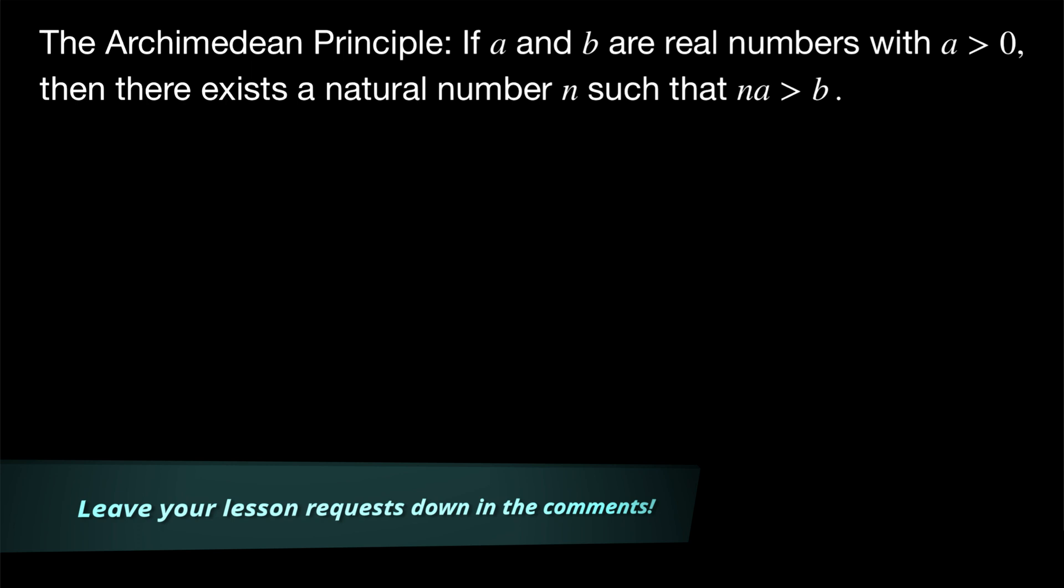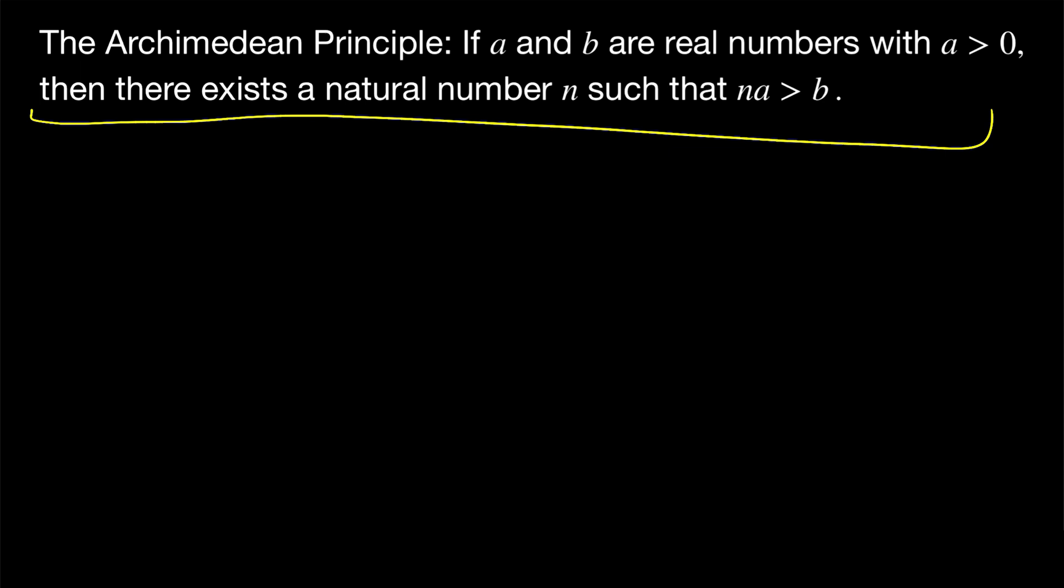This principle should seem pretty obviously true. Certainly for any number B, no matter how big B is, as long as A is positive, we can find a natural number big enough so that N times A will be bigger than B. Another way you could think of it is remember that N times A is basically just adding A to itself N times.